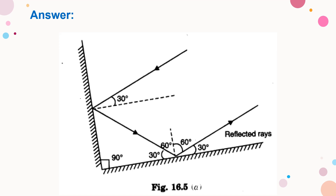This is the incident ray. We are going to draw the reflected ray and then this becomes the next incident ray, and this is the reflected ray from the second mirror, making an angle. Here the angle of incidence is 30 degrees, and here also the angle of incidence is 30 degrees.